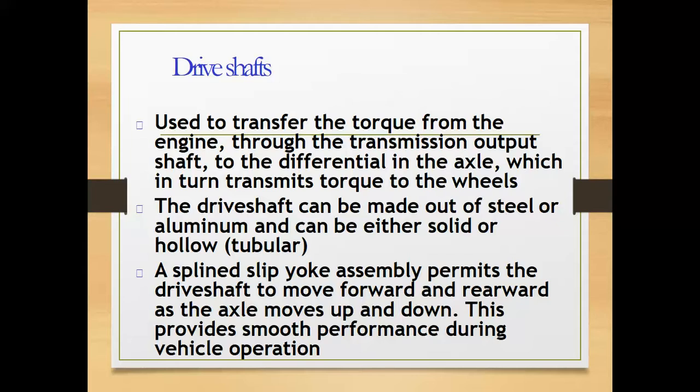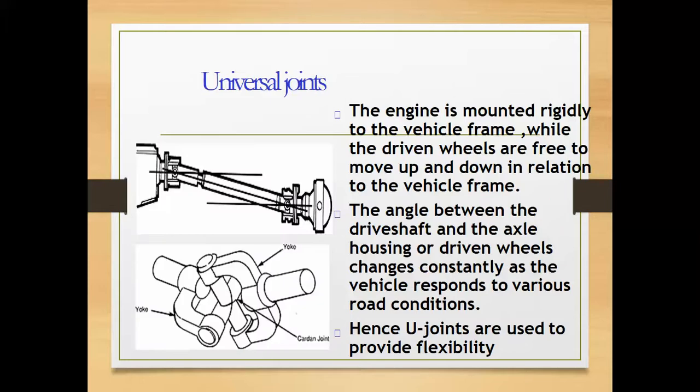A splined slip yoke assembly permits the drive shaft to move forward and rearward as the axle moves up and down, providing smooth performance during vehicle operation. Now we have a universal joint. We can also know the universal joint as a CV joint. The shape of the universal joint is the shape of a U as well as a C, so we put the name U joint and CV joint. The engine is mounted rigidly to the vehicle frame while the driven wheels freely move up and down in relation to the vehicle frame. The angle of the driven shaft and the angle of the housing or driven wheel change constantly in response to various road conditions. Hence U joints are used to provide flexibility.